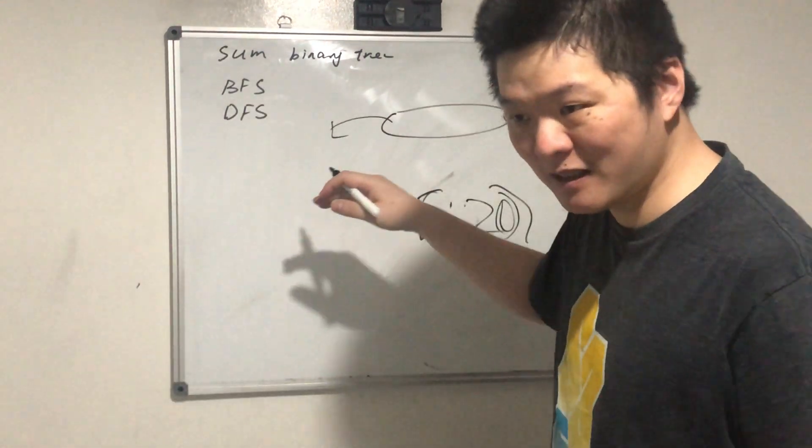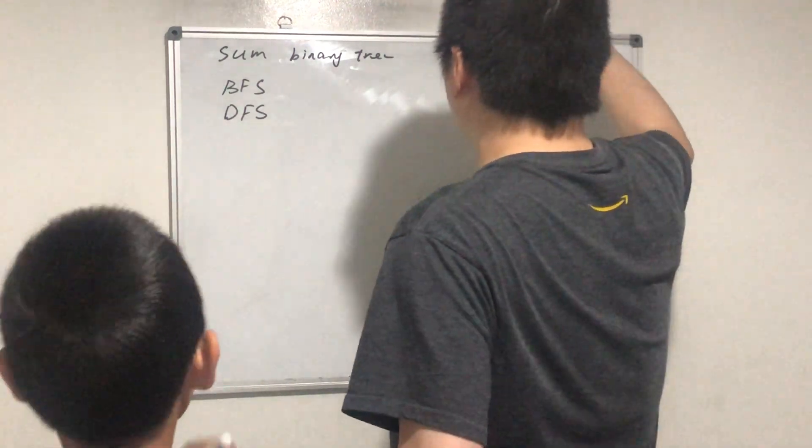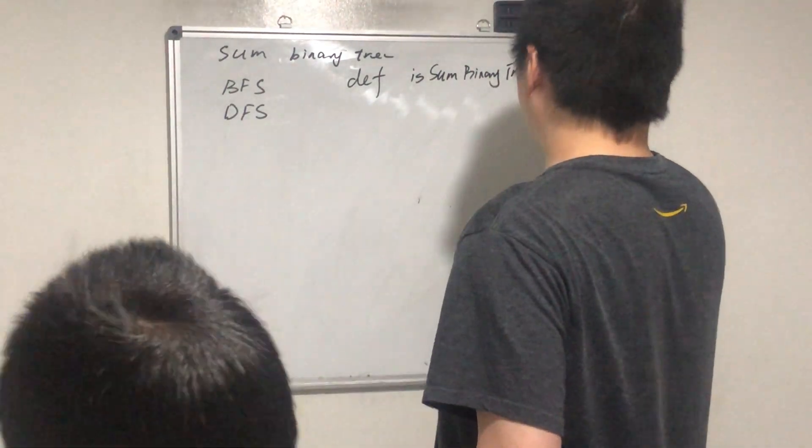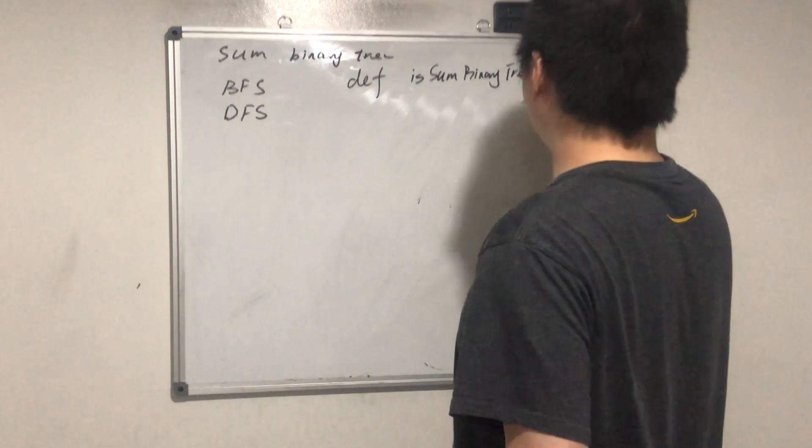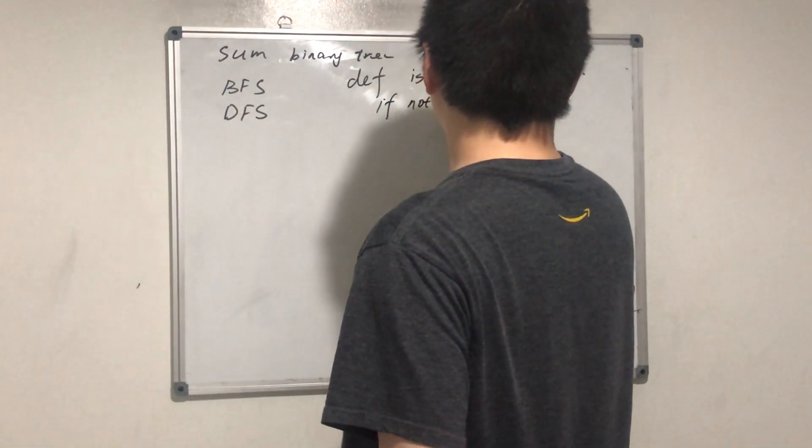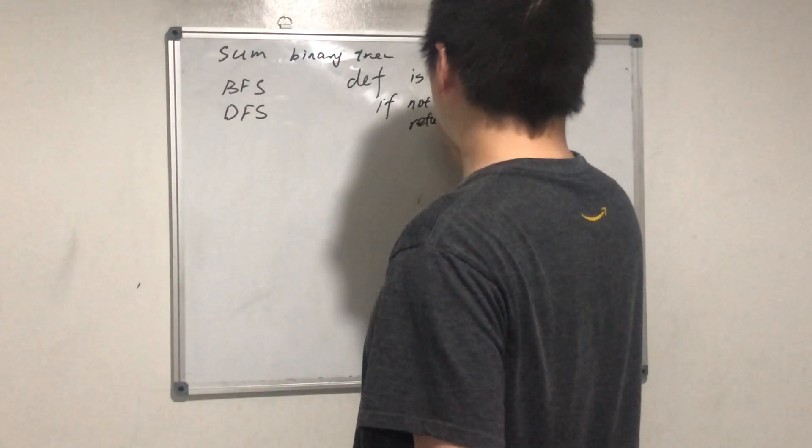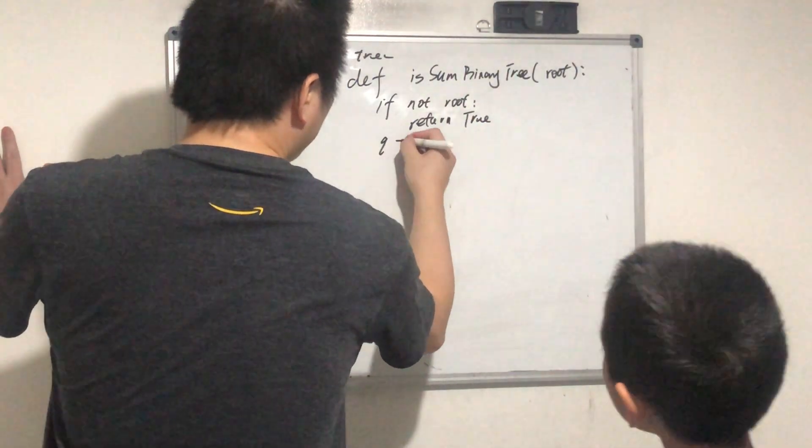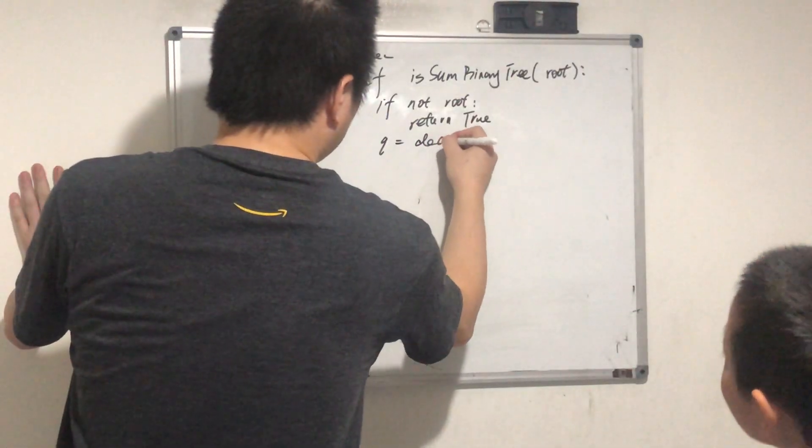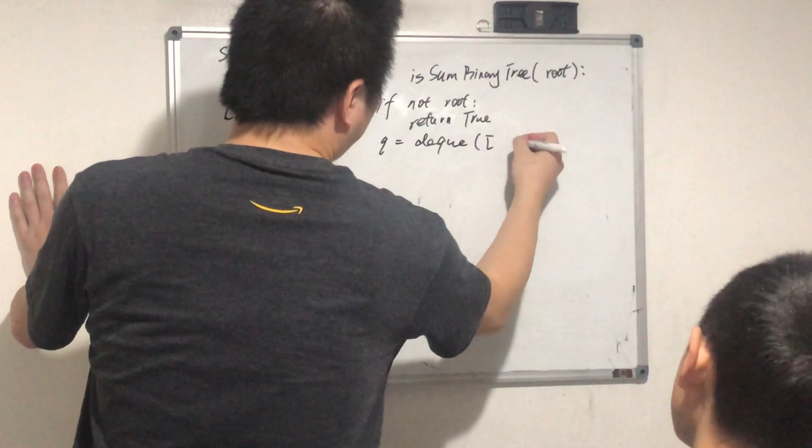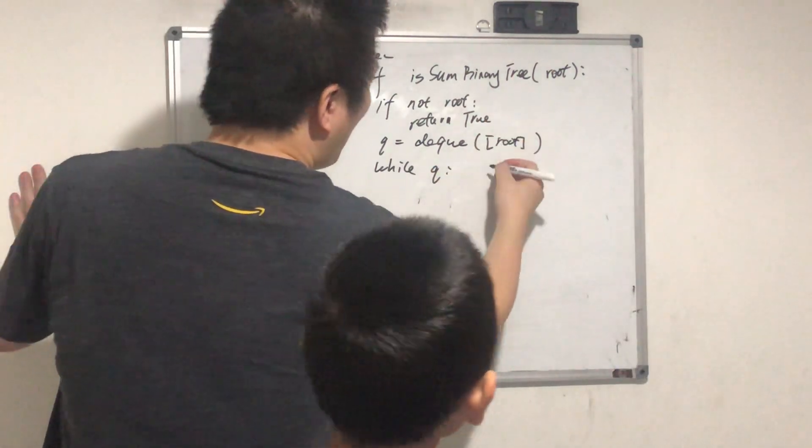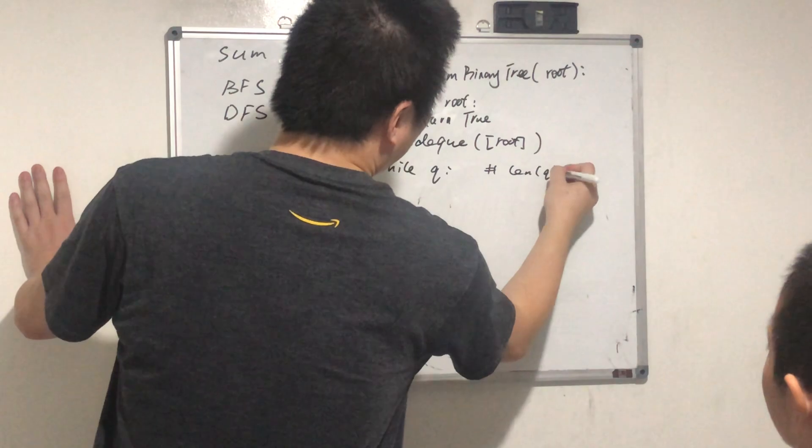Okay, define is_sum_binary_tree(root). What's the pattern? If not root, return True. Yeah, because it's a special case. Okay, let's do q = deque([root]). While len(q) > 0, yeah, this is the same.